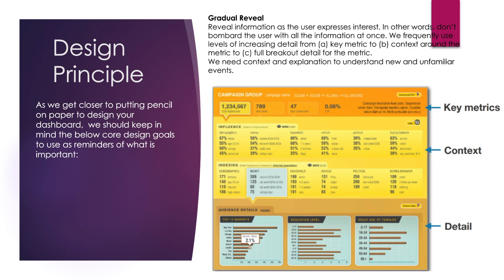As you can see in this dashboard, at the top we are showing the key KPIs and key metrics. Then we are showing the context of these key metrics — what is the influence and how we are indexing the internet population — giving context to those numbers. Then if somebody wants to dig deeper they can see the details, like the top 10 markets, educational level, adult age, or female demographics. All those details are shown at the end, so we are gradually revealing the information one by one and telling the story.